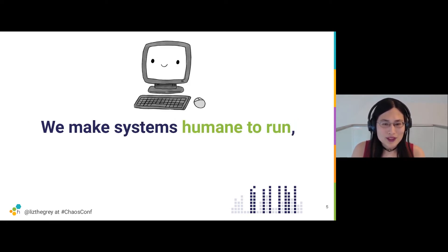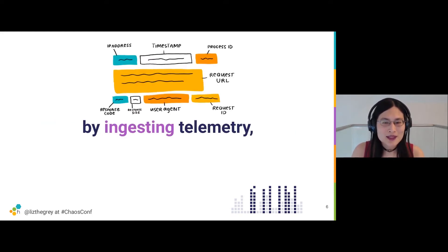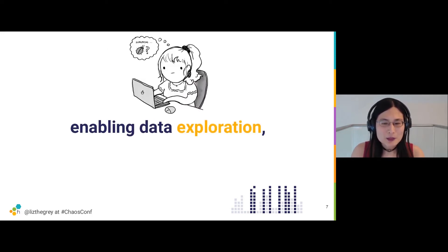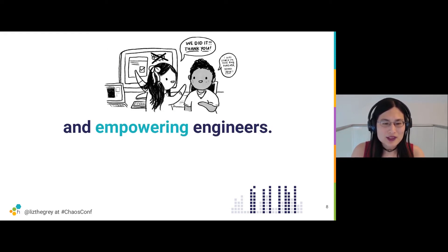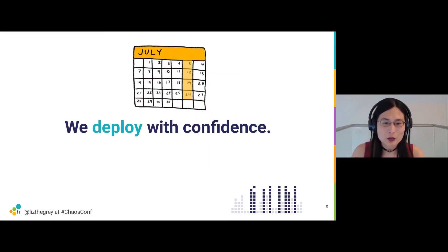So what's our overall goal here? We don't do this in a vacuum — we're not just doing chaos engineering for the sake of chaos engineering. Our goal is to make our customer systems humane to run by ingesting their telemetry in a reliable way, enabling them to explore their data, and really empowering them to understand what's happening inside of their systems. So we have to be empowered to understand our own systems and verify that they're working correctly.